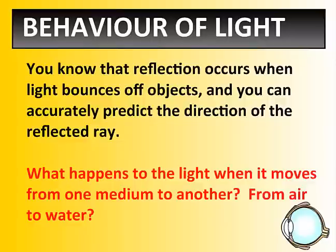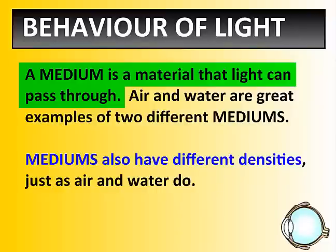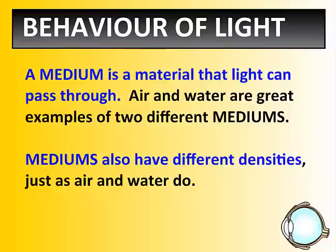But what happens to light when it moves from one medium to another — from, let's say, air to water? First of all, you have to understand what a medium is. A medium is a material that light can pass through. Air and water are the best two examples, because light in our environment is constantly passing through one or the other. Air and water have different densities. Air is less dense than water because the air particles are further apart. Water is more dense because the water particles are closer together. So different mediums have different densities.